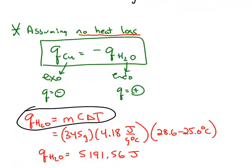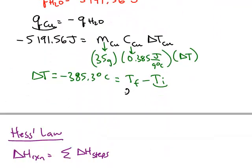So the final temperature of the copper was 28.6 degrees Celsius. So if we solve this equation for the initial temperature, we'll get that the initial temperature of the copper was about 414 degrees Celsius.